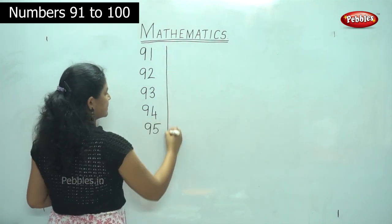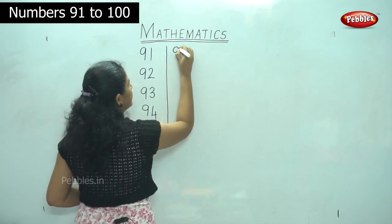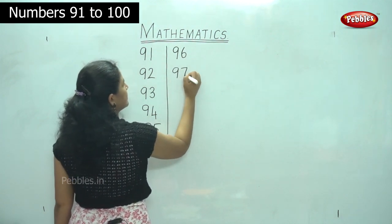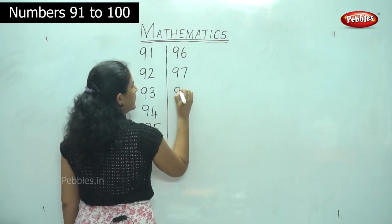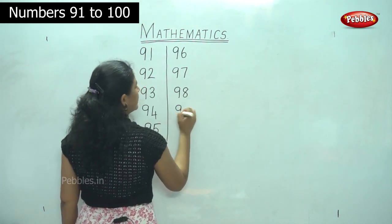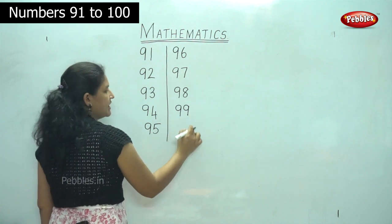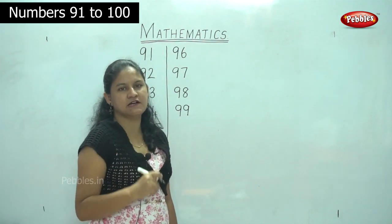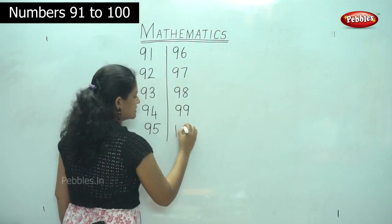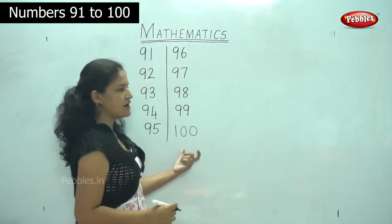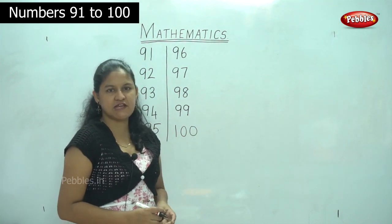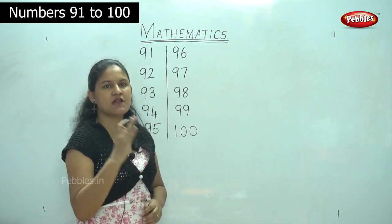So we will be moving on to the next five numbers. 9 and 6: 96. 9 and 7: 97. 9 and 8: 98. 9 and 9: 99. And today we are going to learn to write number 100 — we write 1, 0, 0: 100. So today we have learnt to write the numbers 91 to 100.